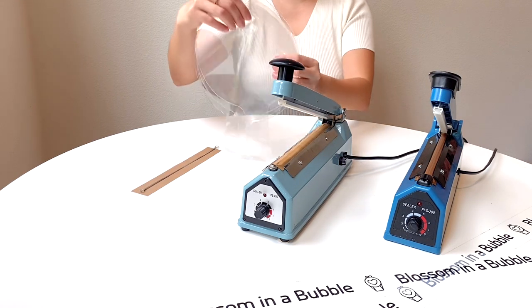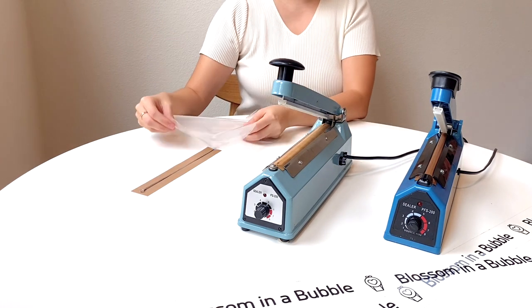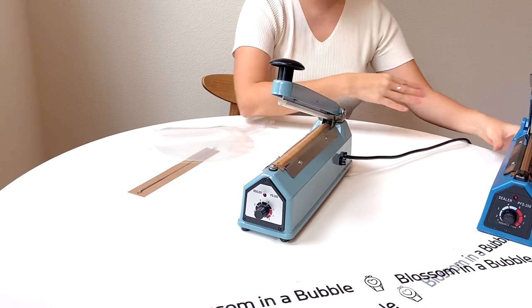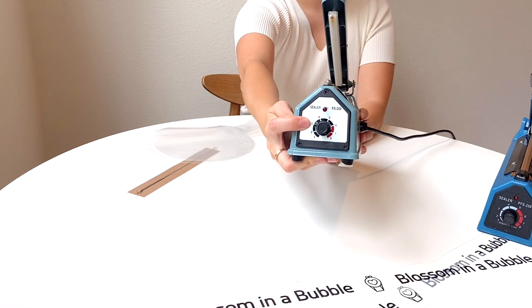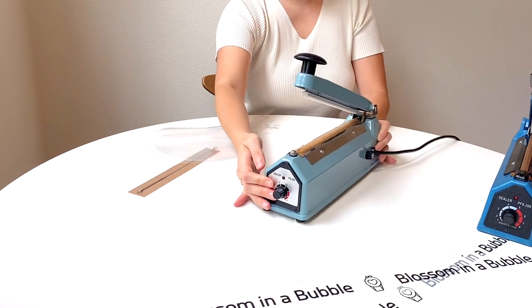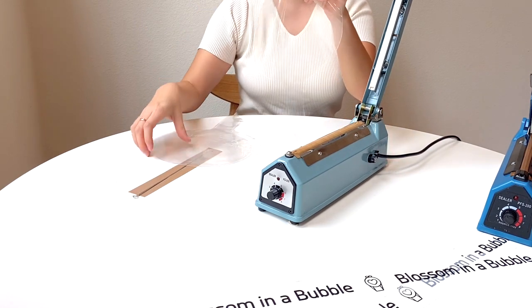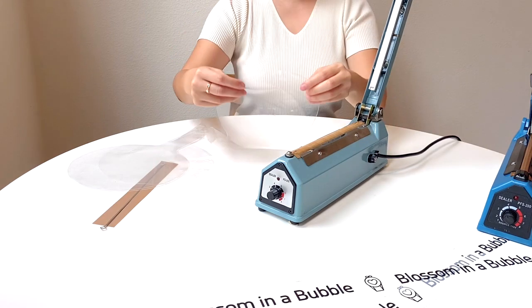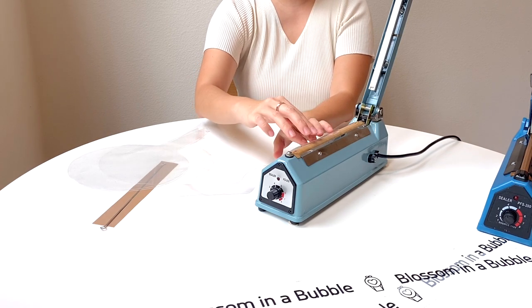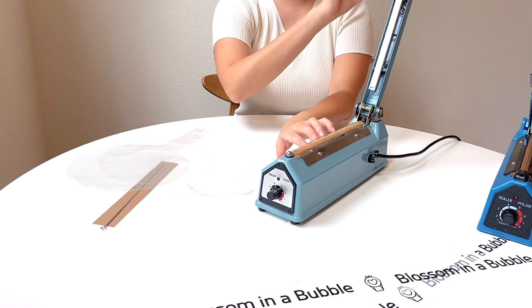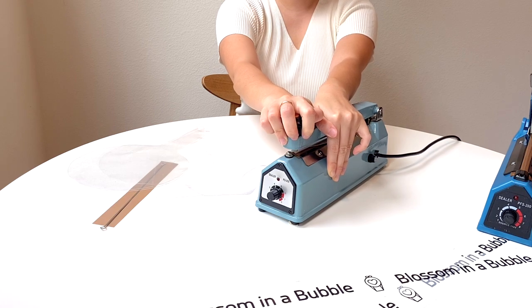Okay, let's test it with bubble balloon. I'm gonna put at number 3, which means 3 seconds. Put your balloon into the sealing line. Push down the cap. It will turn off automatically.